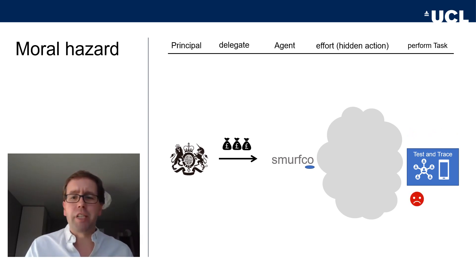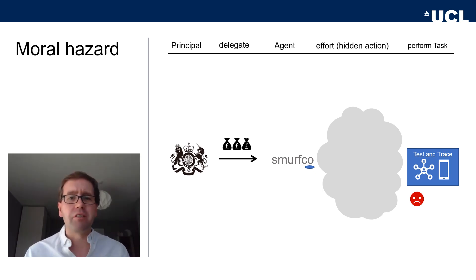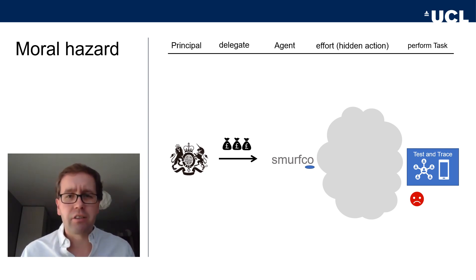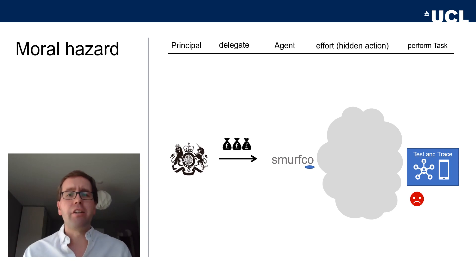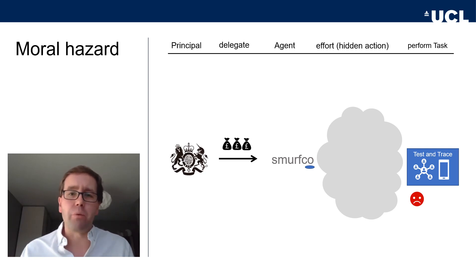This information asymmetry means that the principal cannot be sure whether observing a crappy outcome is due to low effort and profit-seeking behavior by the agent, or whether it's just due to chance and the difficulty of the task. This is the core of the problem: a principal delegates a task to an agent who engages in some unobservable action that then determines the outcome for both the principal and the agent.